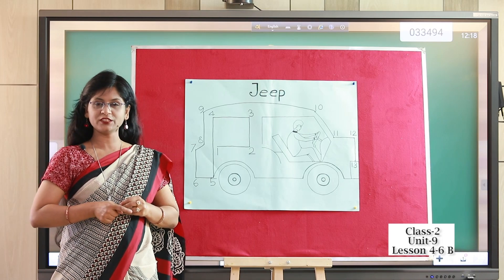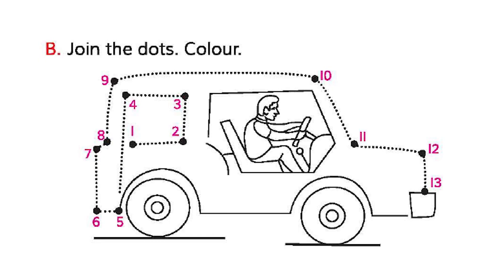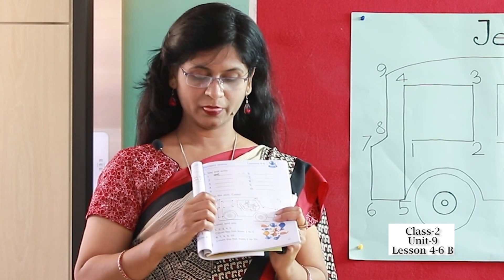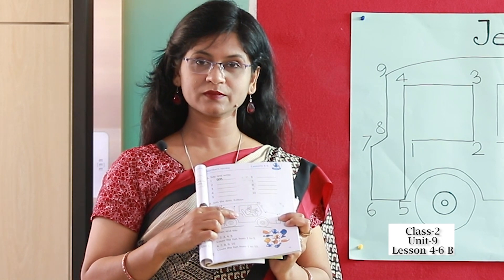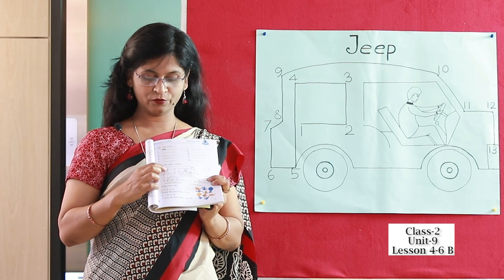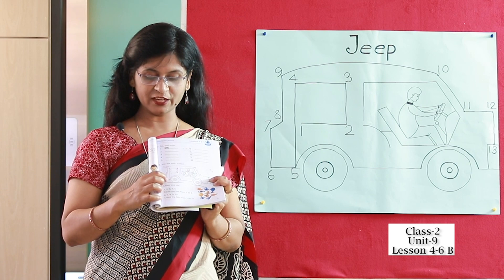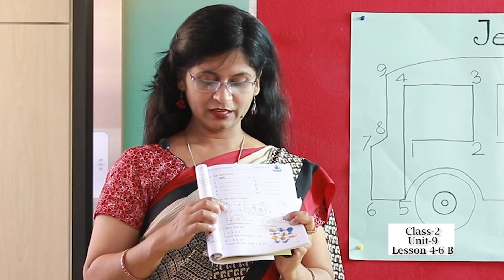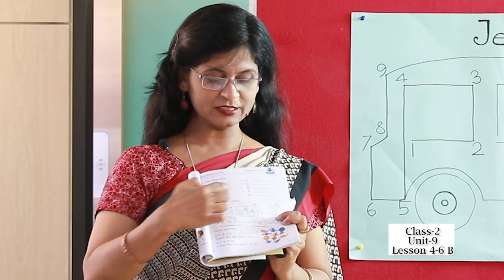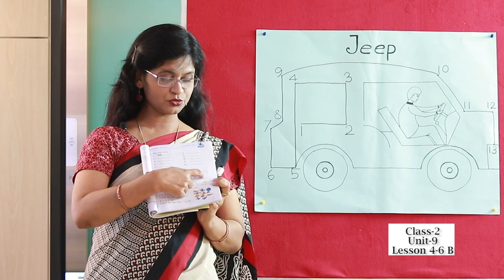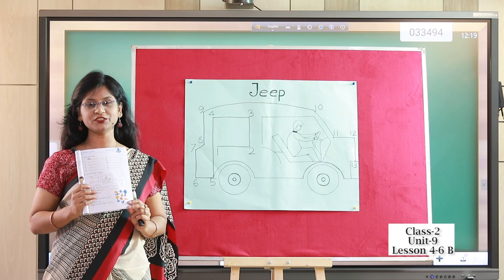Join 1 to 2, then 2 to 3, 3 to 4, 4 to 5, 5 to 6, 6 to 7, 7 to 8, 8 to 9, 9 to 10, 10 to 11, 11 to 12, and 12 to 13. Yes! You completed your drawing — a zip!